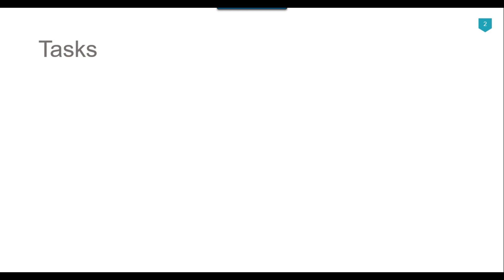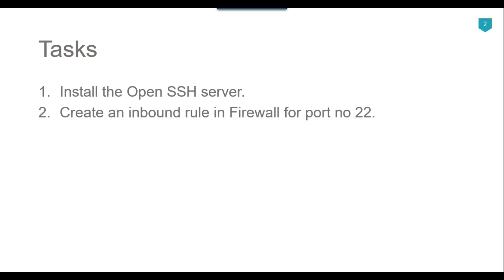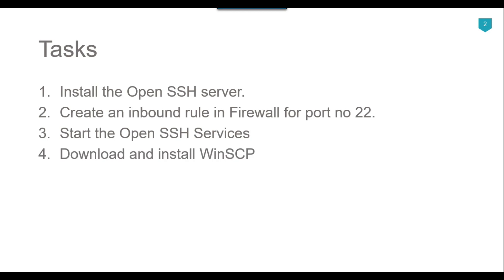In this particular video, we will see how we can install the SFTP server on the Windows 10 machine. There are a few tasks we will do: first, we will install the OpenSSH server; then we will create an inbound rule in the firewall for port 22; then we will start the OpenSSH services from services.msc; then we will download and install the WinSCP tool; and finally we will connect to the SFTP server.